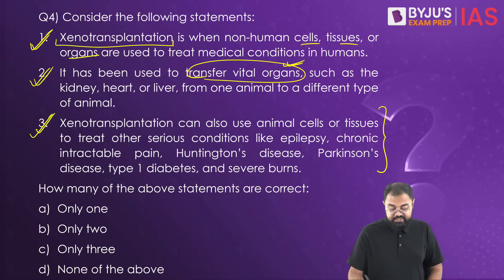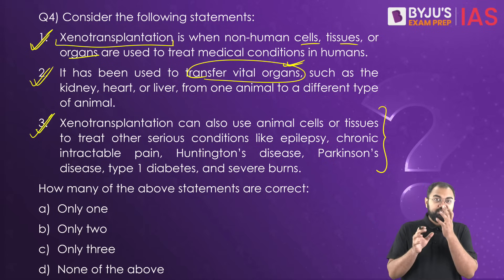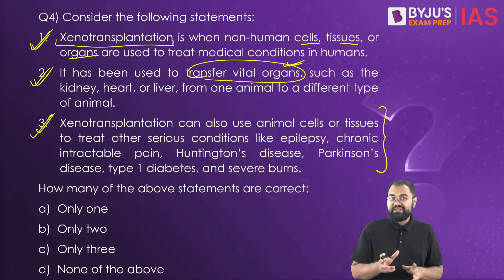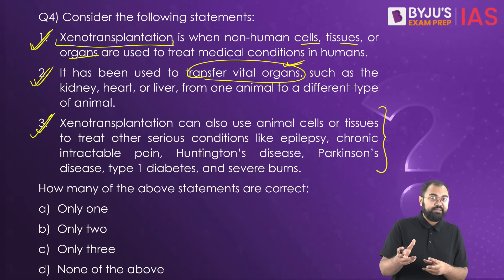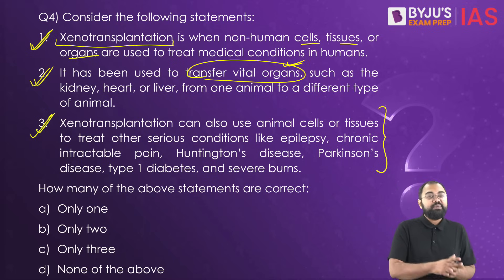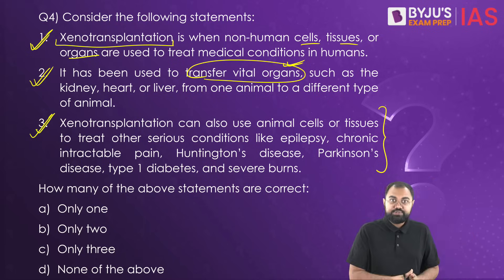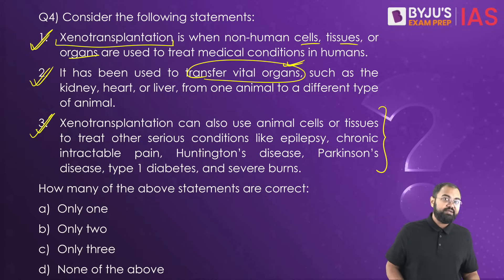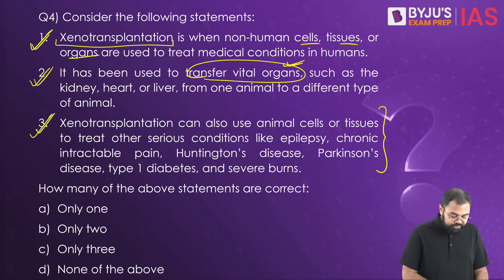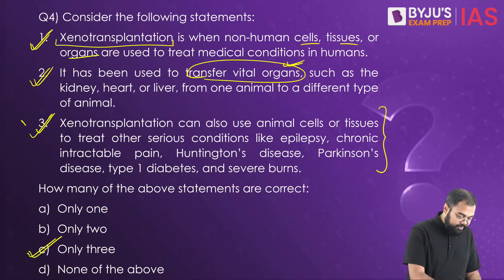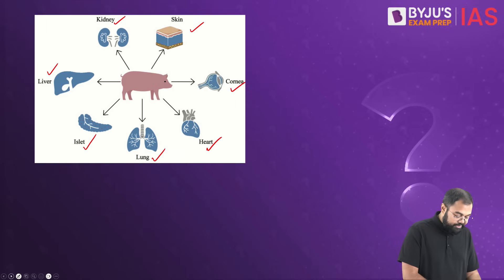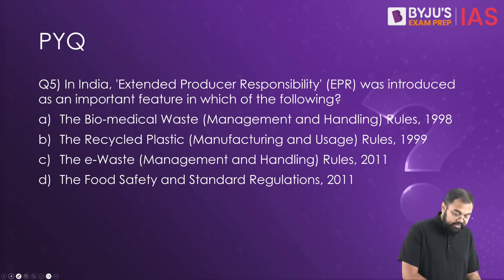The third statement is also correct. The reason it's highlighted is that when discussions around xenotransplantation happen, we often only focus on organ transplantation. But it's not only organ transplantation — cell and tissue transplantations can also be done through xenotransplantation. So all three statements are correct, and specifically remember this third statement.